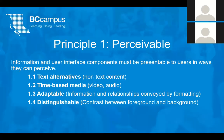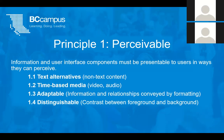The first principle is perceivable — the idea that information and user interface components must be presentable to users in ways that they can perceive. All content included in a resource should be perceivable through a user's senses, meaning all information needs to be available through sight, sound, and touch, or available in such a way that assistive technology could translate that content for another sense. This principle includes things like text alternatives for non-text content, how to handle video and audio, and the importance of content being adaptable and distinguishable.